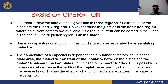The Varactor diode operates under reverse bias, giving rise to three regions. At either end are the P and N regions. Around the junction is the depletion region where no charge carriers are available. As a result, current can flow in the P and N regions, but the depletion region acts as an insulator.